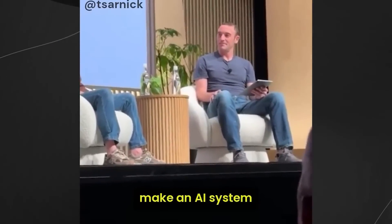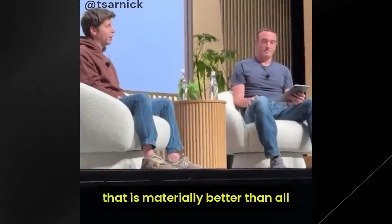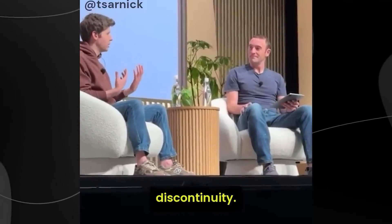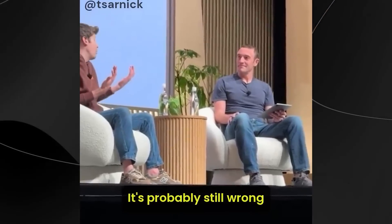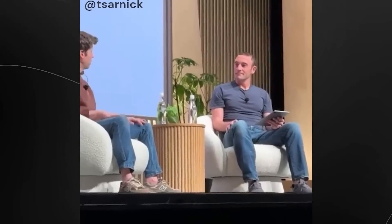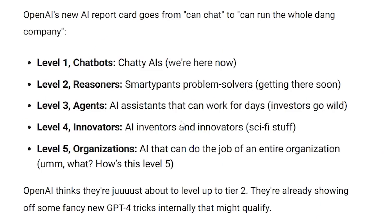If we can make an AI system that is materially better at all of OpenAI than doing AI research, that does feel to me like some sort of important discontinuity. It's probably still wrong to think that way. It probably still is the smooth exponential curve, but that feels like a good milestone. The next level for OpenAI after agents, which is quite likely to be next year, is AI inventors and innovators, which is what they dub sci-fi stuff.